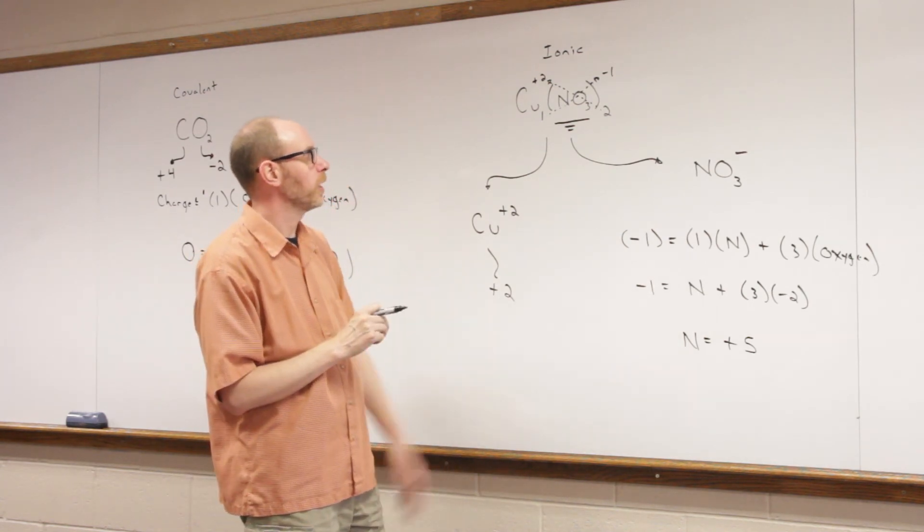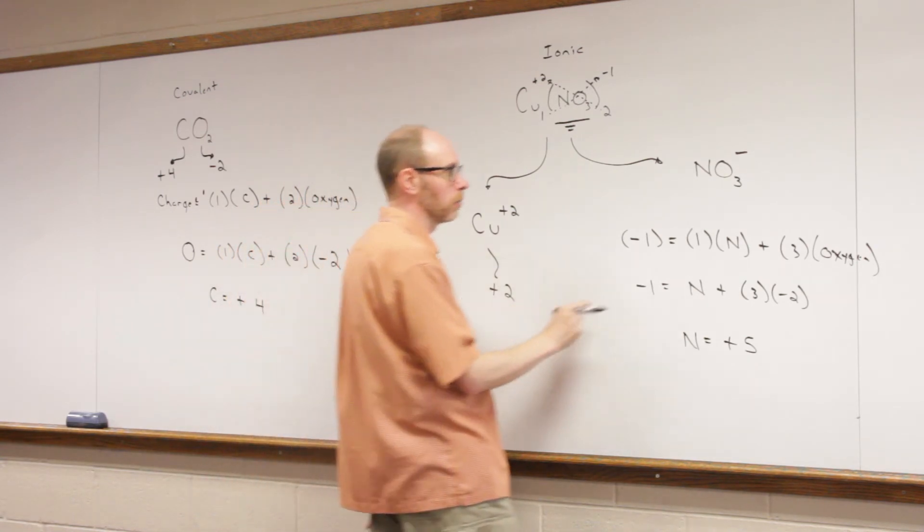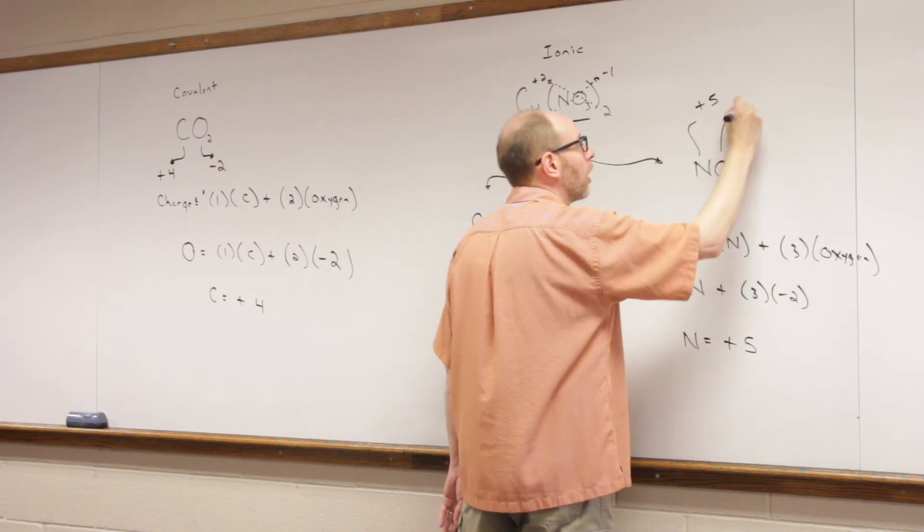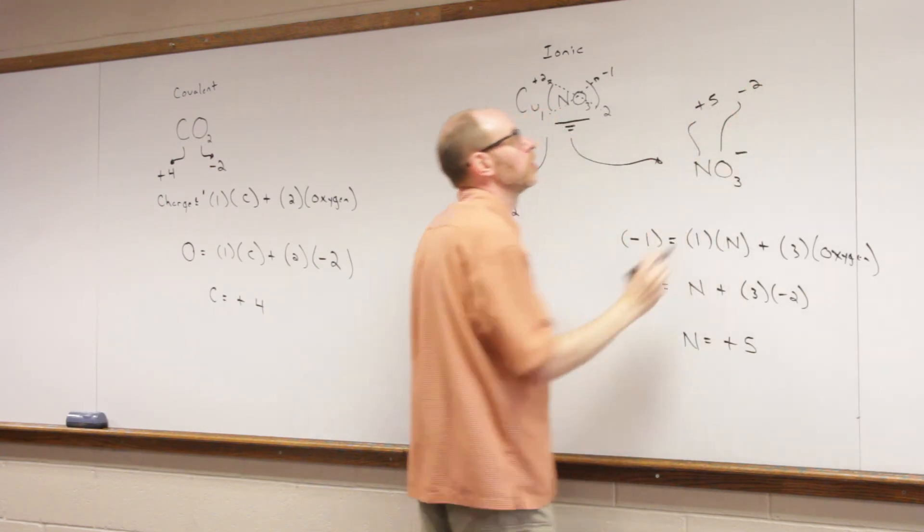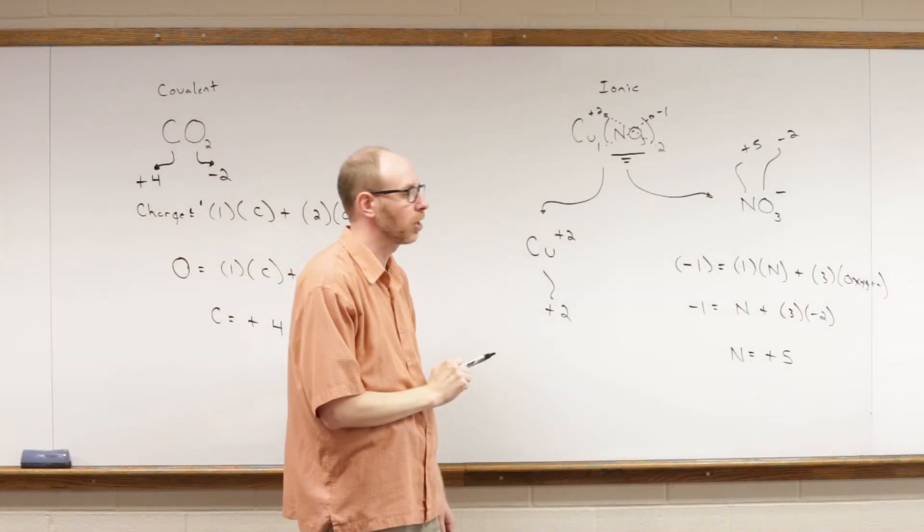So now what do we know? Well, we know that copper is plus 2, that's its oxidation number. We know that nitrogen is plus 5, and we know that oxygen is minus 2. So we have calculated the oxidation numbers for each of the elements in that compound.